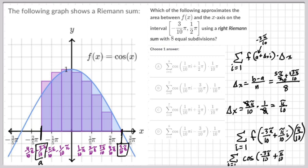We have cosine of (-3π/10 + π/10·i) and then multiplying by π/10. We're missing one more number. What's this last number gonna be up here? It's gonna be eight because we want eight iterations, eight rectangles.